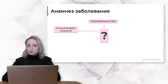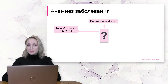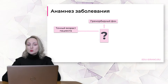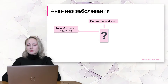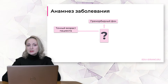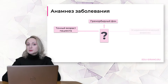Во-вторых, это преморбидный фон: чем ещё болеет ребёнок? Есть ряд лекарственных препаратов, которые вызывают увеличение лимфатических узлов. Например, у детей с эпилепсией, находящихся на противоэпилептической терапии, часто можно увидеть генерализованную лимфаденопатию: пальпируются фактически все группы периферических лимфатических узлов, увеличенных до 1,5–2 см. Для этой группы пациентов это нормально, поскольку генерализованная лимфаденопатия при приёме противоэпилептических препаратов является нормальным течением событий.